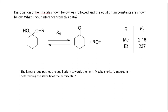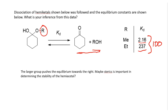The next question is about a hemi-ketal derived from cyclohexanone, which is in equilibrium with the ketone and the alcohol. Measuring the equilibrium constant, the value for the methyl compound is 2.16, whereas for the ethanol derivative it is 237 — a difference of about 100-fold. Keep in mind this is Kd, the equilibrium constant for dissociation. The inference from this experiment, although there are only two data points, is that the larger the alcohol, the more the equilibrium is pushed toward dissociation.